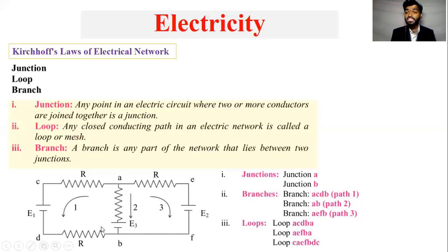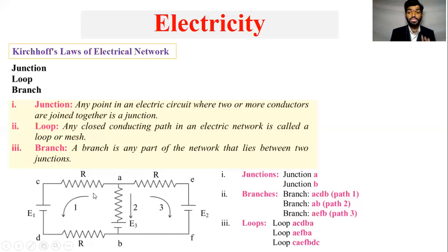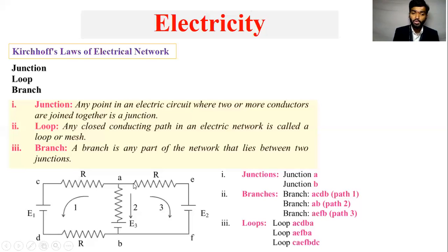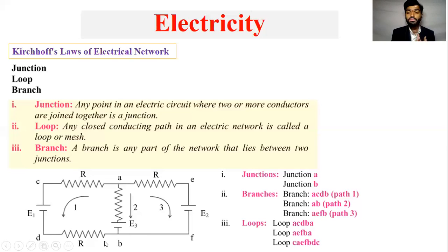The loop is where it starts and then it ends back at the same point. But the branch is where it starts and it will end at a different junction. For example, a branch from A to C to D to B. That is a branch — it connects two junctions.